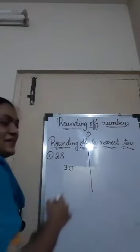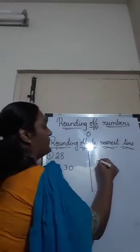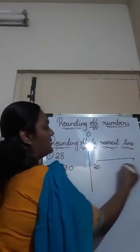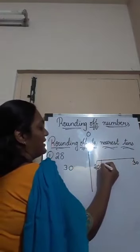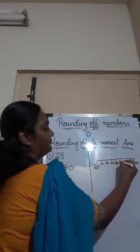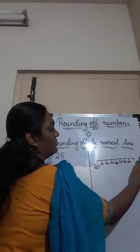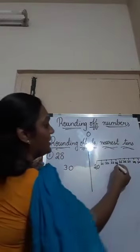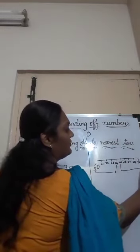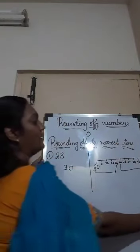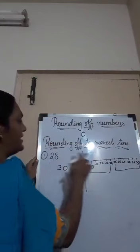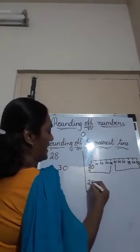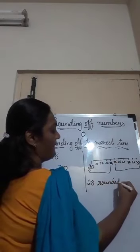Now let's see one more method — on the number line. Take a number line. 28 lies between 20 and 30. The middle is 25. Numbers 21, 22, 23, 24 — from here we round off to 20. From 25 onwards, whatever number we have, we round off to 30. So 28 is on that side, so we round off 28 to 30.